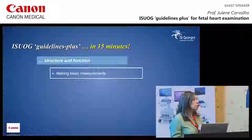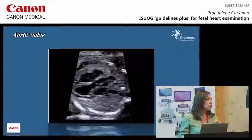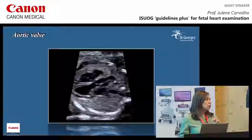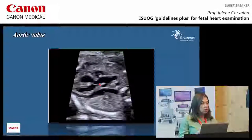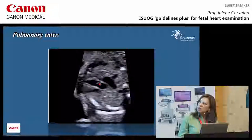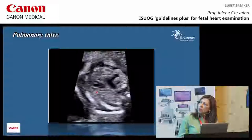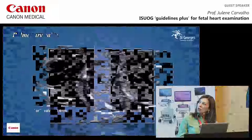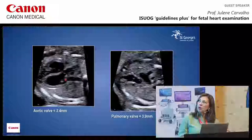For basic measurements, if you don't measure anything, I suggest you measure at least two things on your scan: the aortic valve and the pulmonary valve. It makes you look at the image. Stop the image and see the valve opening and closing. The pulmonary valve should be seen opening and closing as well — that's the sweep from the aorta to the pulmonary valve.